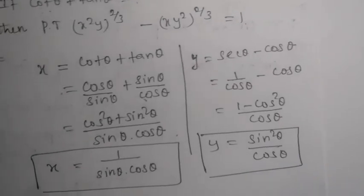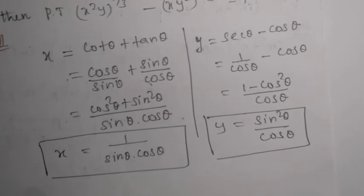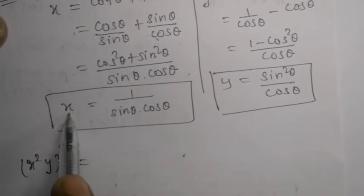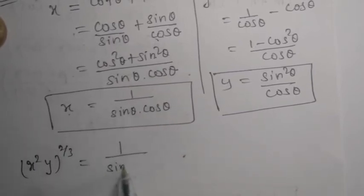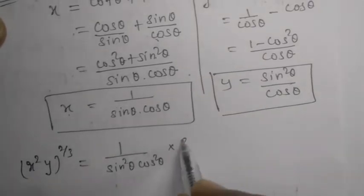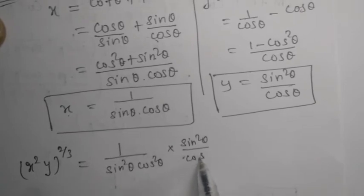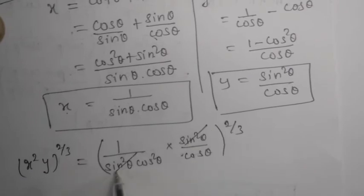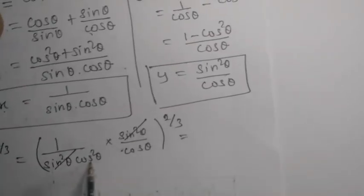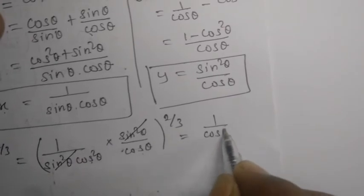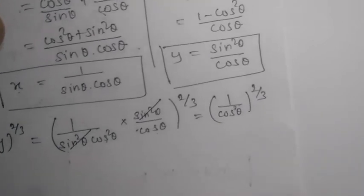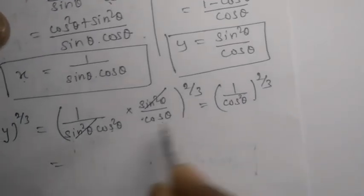Now computing x squared y to the power 2 by 3. x squared is 1 divided by sin squared theta into cos squared theta. y is sin squared theta divided by cos theta. x squared y gives sin squared theta over sin squared theta into cos squared theta into cos theta, which simplifies to 1 over cos cubed theta, and 1 over cos theta is sec theta — so this becomes sec cubed theta to the power 2 by 3.